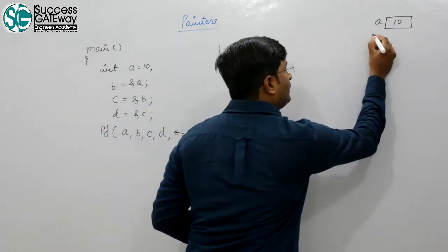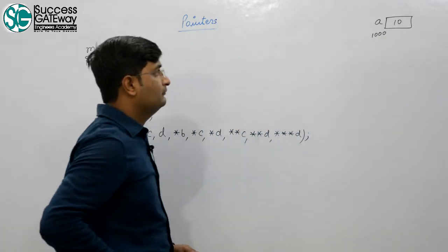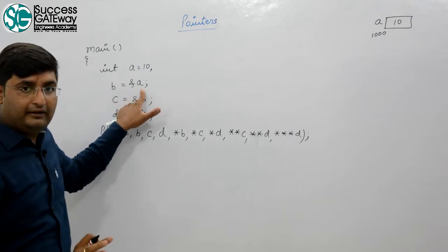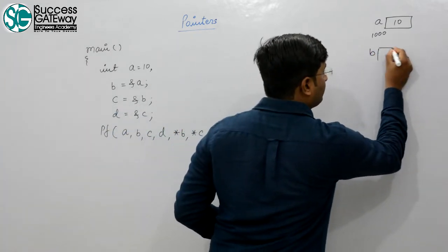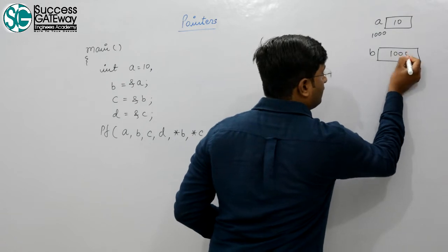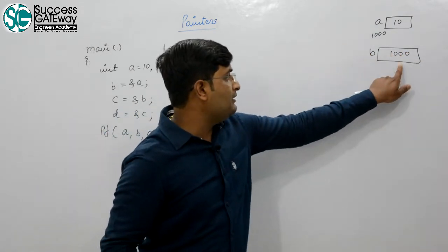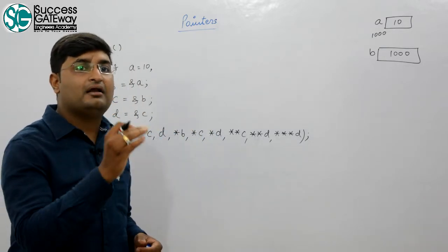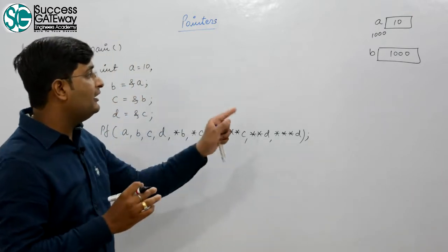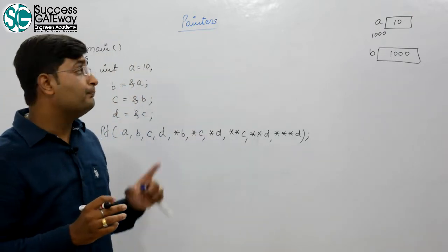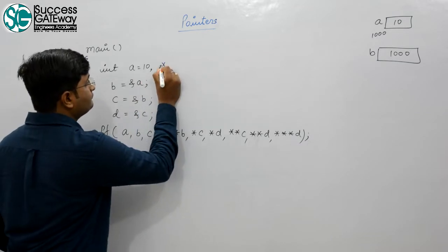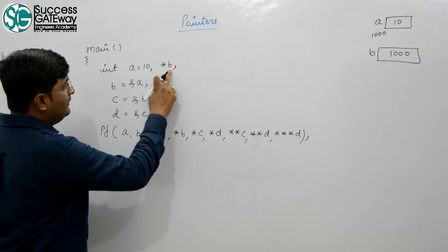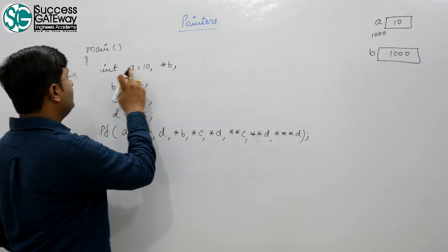Let the location of a be 1000. b is holding the address of a, so b is holding 1000. Since 1000 is the address of a, and a is of type integer, the declaration of b should be pointer to integer. So we write: int *b — b is a pointer to integer.